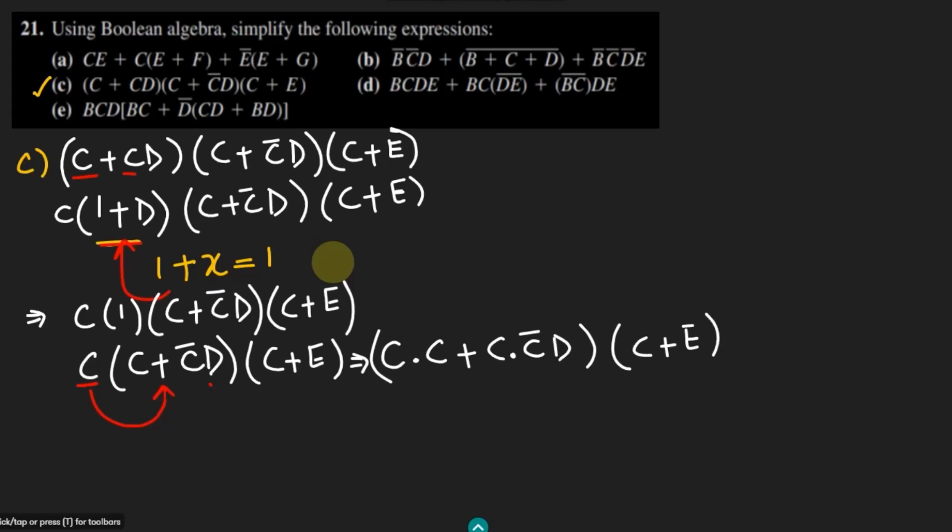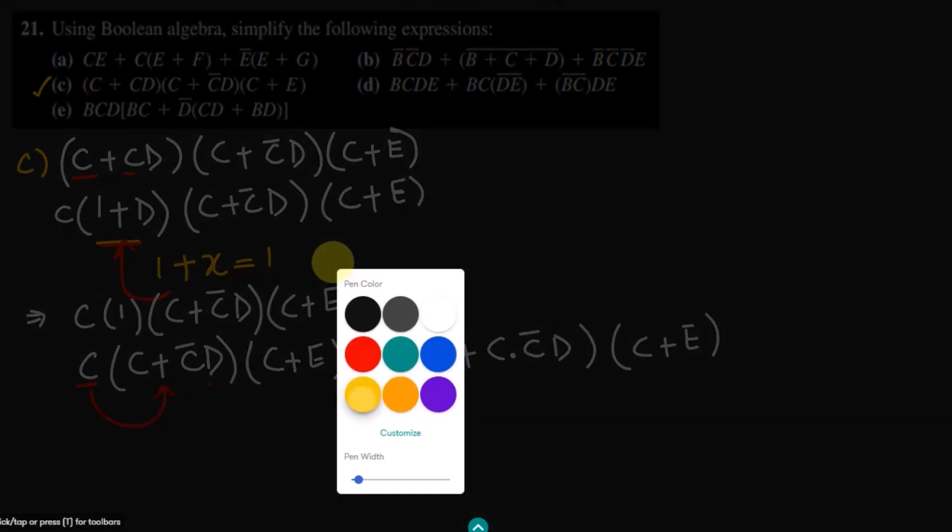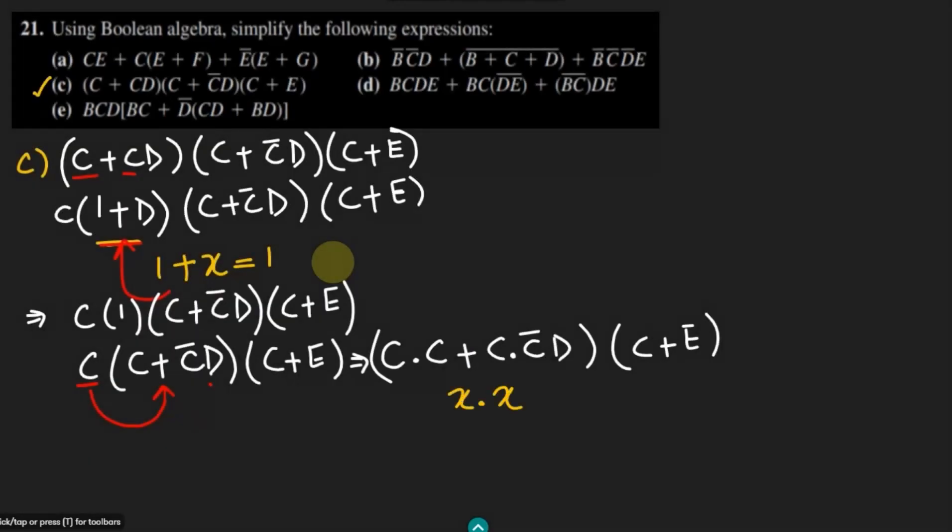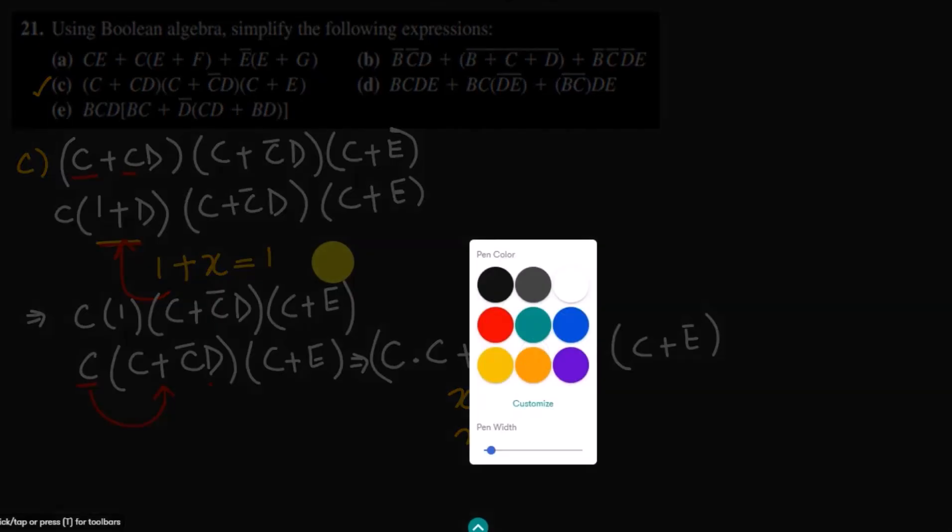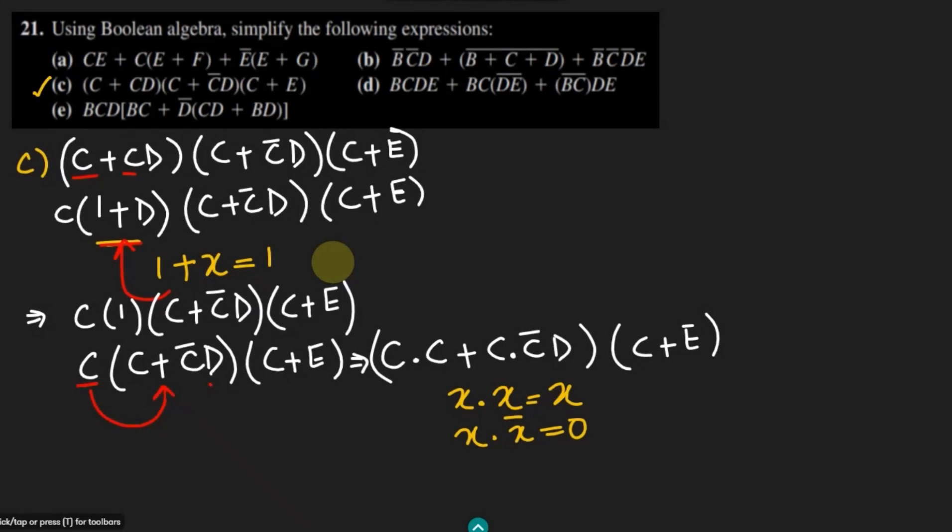Now according to rules of the Boolean algebra, we can see that x dot x is always x and x dot x prime is always 0. Now applying it here, we can apply this rule here and here.